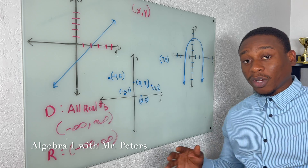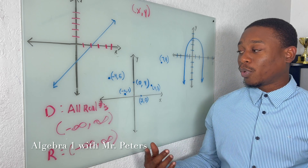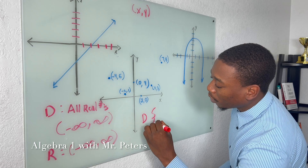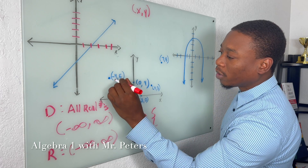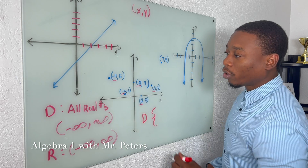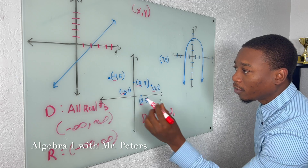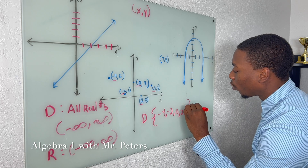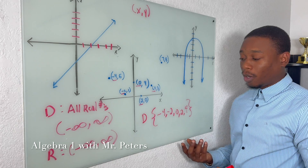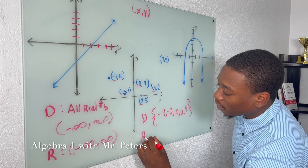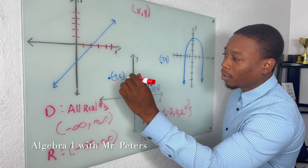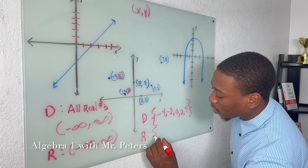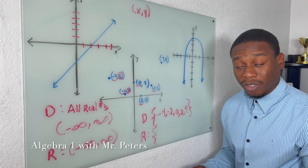Now problem number two — they try to trick us. They don't give us a line, they just give us points. But this is easier than we think. What we need to do here is list our domain from least to greatest, meaning we're going to list all these X coordinates in order from least to greatest. So I have negative 4, negative 2, 0, 2, 4. And then we're going to close this domain set.